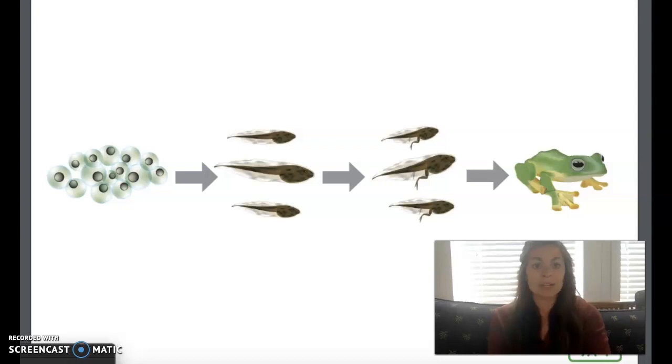After some time, the tadpole begins its transformation into a frog. When a living thing undergoes a huge change in shape, this process is called metamorphosis. Tadpoles change quite dramatically from fish-like creatures with gills into four-legged land creatures with lungs. Let's find out more about this remarkable transformation.